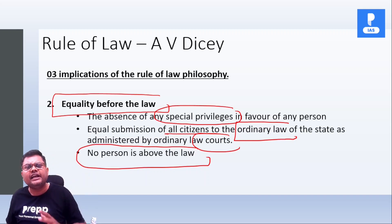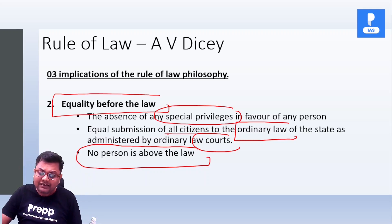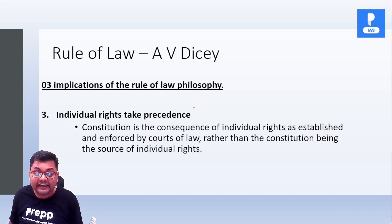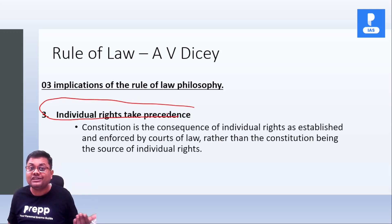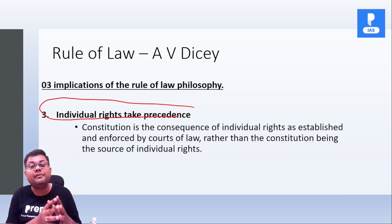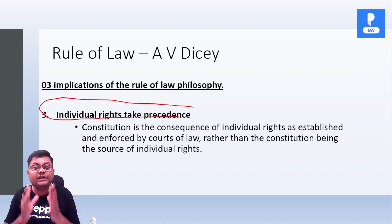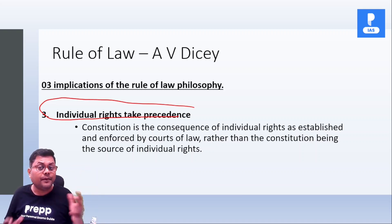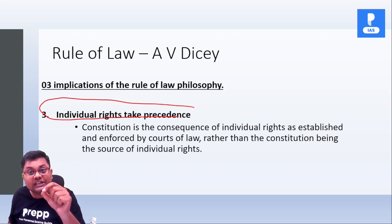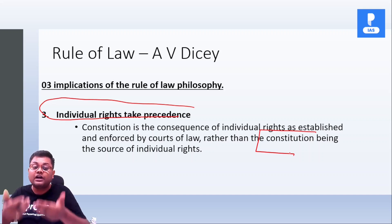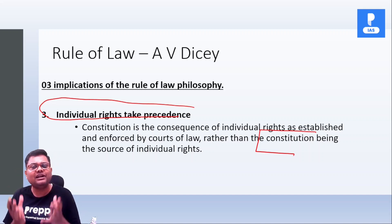Friends, ye jo dono implications hain, ye India mein bhi applicable hain. But the third implication is not applicable in India. The third implication is individual rights take precedence — matlab constitution is the consequence of individual rights. Dekhiye, in Britain, wahan pe Parliament is supreme. Toh koi bhi parliamentary law hoga, that will be part of the constitution. Isliye ye jo third implication hai, woh wahan pe applicable hai. But in case of India, constitution is supreme. Toh humare yahan pe constitution is the source of individual rights. Isliye ye jo third implication hai, ye India mein applicable nahi hoti hai.